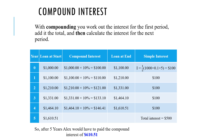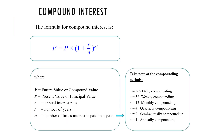The formula is: F equals P times (1 plus R over N) to the power of N times T. F is the future value — the value at the end of the term. P is the present value. R is the annual interest rate. N is the number of times you compound — the number of times you take your interest and add it back to your principal. T is years. Your question will tell you how many times it's compounded, so you just follow.